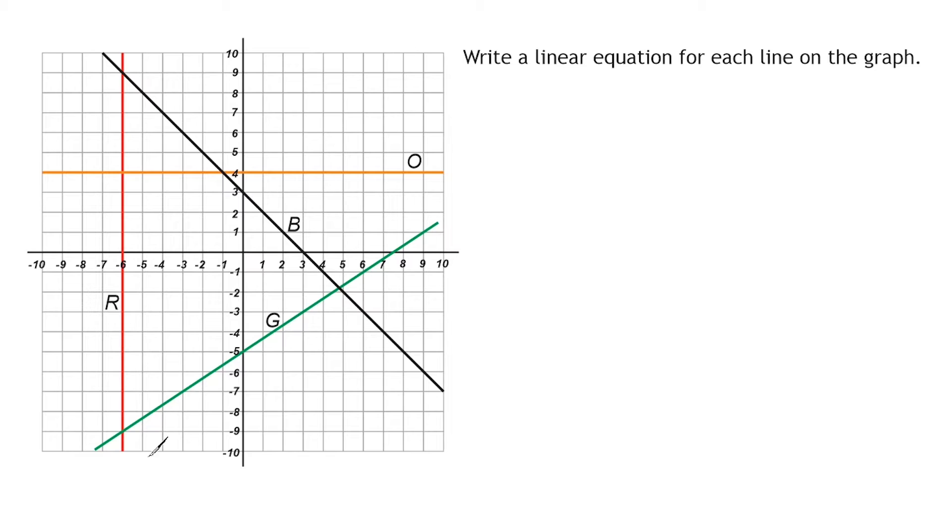We're going to start with this red vertical line. Now when writing an equation for a vertical line, what you do is you identify what value it is crossing on the x-axis. In this case, our red line is crossing negative 6. And what you do is you start by writing x, and then you write equal to the value that it crosses on the x-axis, which in this case is negative 6, and that is it. X is equal to negative 6.